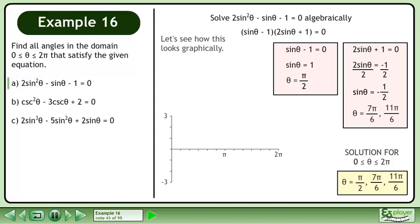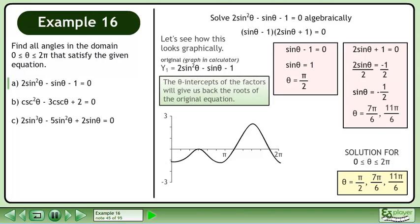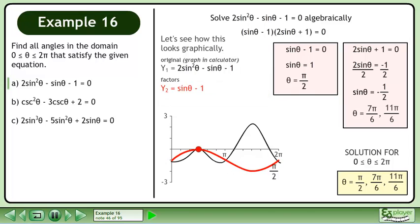Let's see how this looks graphically. Graph the original function y1 = 2sin²θ - sinθ - 1 in a calculator. The θ-intercepts of the factors will give us back the roots of the original equation. Graph the first factor y2 = sinθ - 1, then graph the second factor y3 = 2sinθ + 1. This gives us back the roots at 7π/6 and 11π/6.